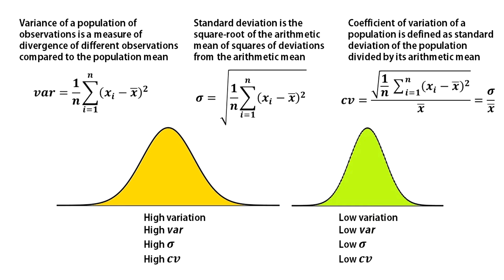Finally, the coefficient of variation of a population is defined as the standard deviation of the population divided by its arithmetic mean. If you like, you can estimate its percent value just by multiplying it by 100.